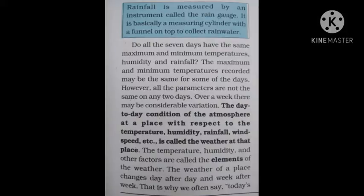The day-to-day condition of the atmosphere at a place with respect to temperature, humidity, rainfall, wind speed, etc. is called the weather at that place. कोई भी एक place की बात की जाए तो वहाँ पे day-to-day में उसके humidity, rainfall, temperature, wind speed — यह सब के according जो condition निकलती है, तो उसको उस जगह का weather कहते हैं।